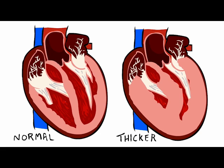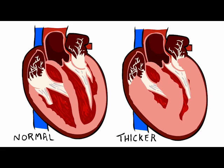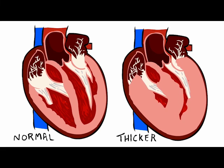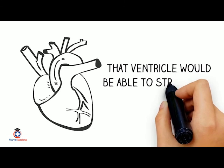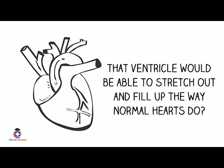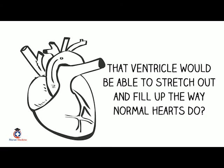The less compliant heart — the thicker one — would have a higher pressure for the same volume. Not only that, but the ventricle would not be able to stretch out and fill the way a normal heart does.